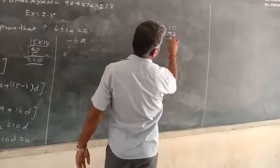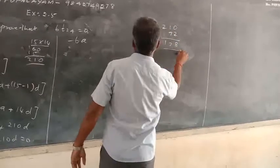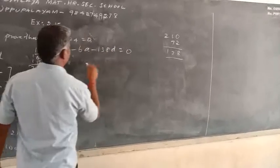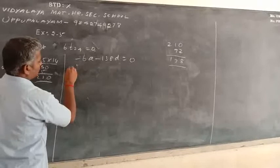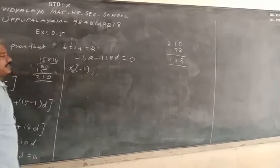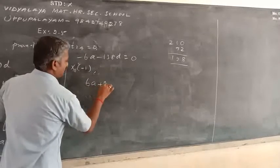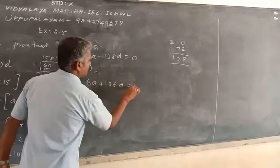10, 10 minus 7, 3, 1. So minus 138D is equal to 138D. So minus 138D is equal to 0. Total term multiplied by minus 1. So 6A plus 138D is equal to 0.